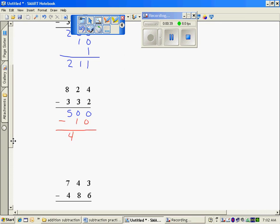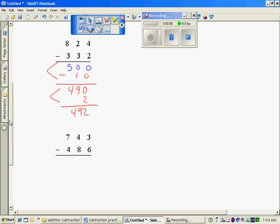500 minus 10 is 490. 4 minus 2 is 2. My value is 492. Notice in this area you subtract. Here is what you have left, so you're adding them together.